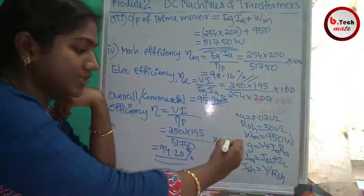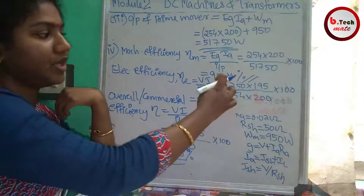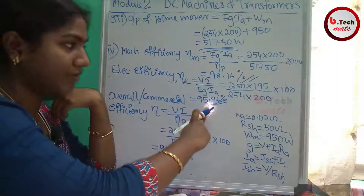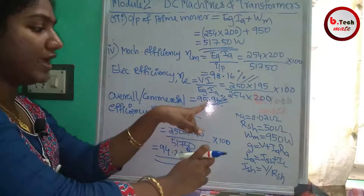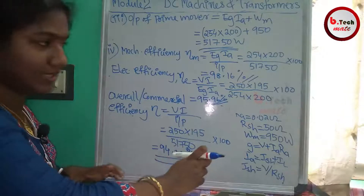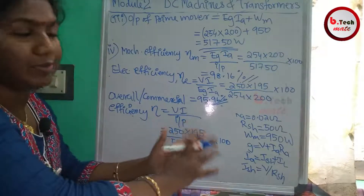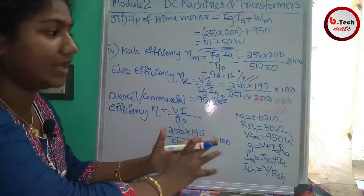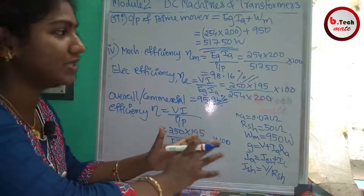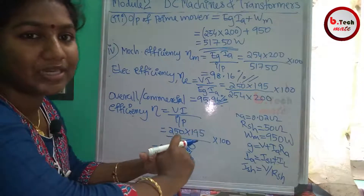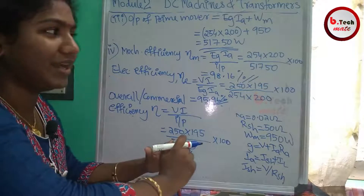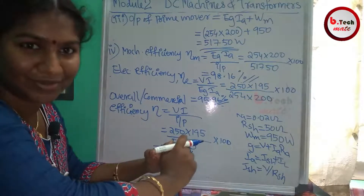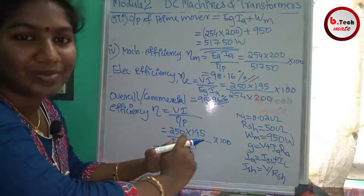In summary, the mechanical power is highest, and efficiencies decrease step by step. Mechanical efficiency is 98.16%, electrical efficiency is 95.96%, and overall commercial efficiency is 94.20%. That completes the problem on power flow, power flow equations, and power stages for the DC generator.